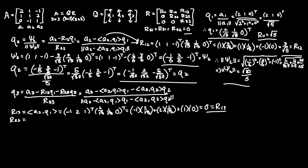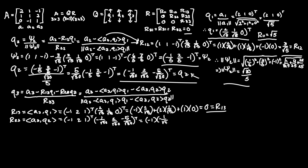Now for R23, that is the inner product of A3 and Q2. So (-1, 2, 1) transposed times Q2 = (-1/root30, 2/root30, -5/root30). This gives: -1 times -1/root30, plus 2 times 2/root30, plus 1 times -5/root30, which equals 1/root30 plus 4/root30 minus 5/root30, which is all 0. So R23 equals 0.